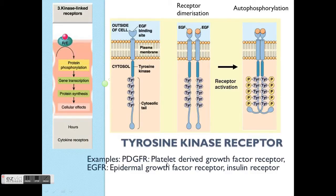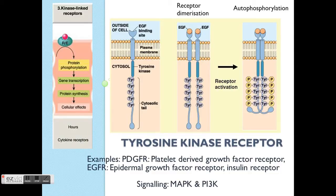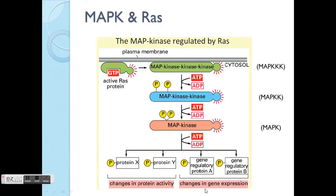Examples of tyrosine kinase receptors mainly involve all the growth factors. Examples include PDGFR — platelet-derived growth factor receptor — EGFR, epidermal growth factor receptor, and also the insulin receptor. All these receptor activations cause downstream effects activating two main pathways, which will be introduced in this class: MAPK and PI3K.